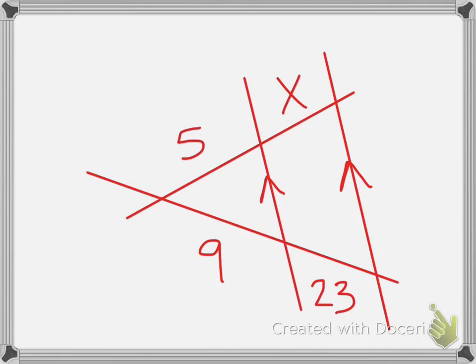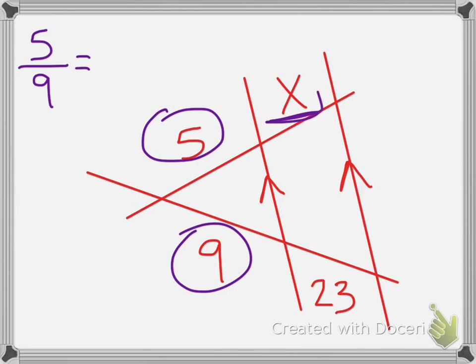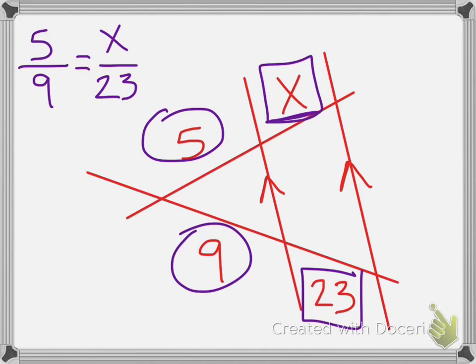We've got to match up the sides so there's a couple ways we can do it. I like to do top left over bottom left equals top right over bottom right. That's just one way you can do it. Another way, I'll just show you one other way, would be like we could do top left over top right, 5 over x, equals 9 over 23. There's a few different ways we could do it, but I'm going to go with my way over here. And remember we cross multiply, this one's not so easy to see just by looking, so we've got to cross multiply.